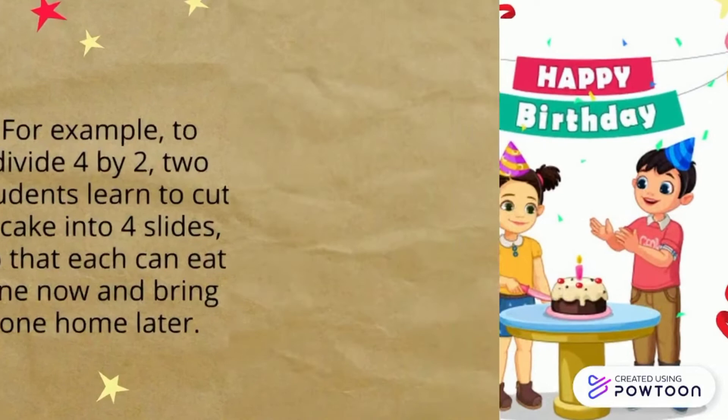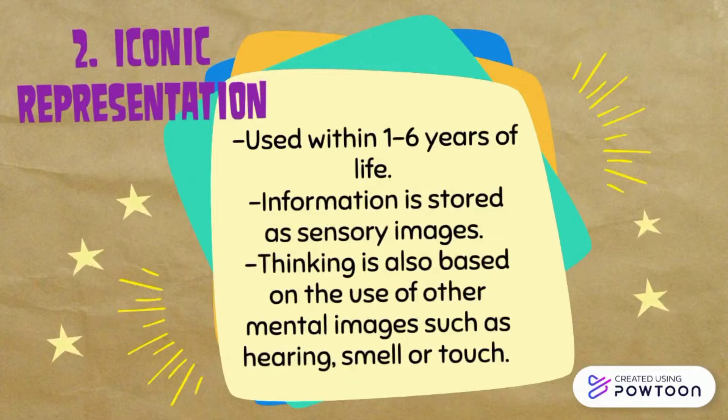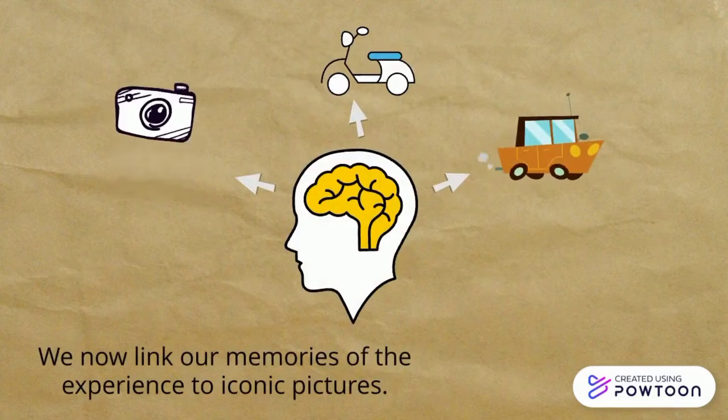Step two is iconic representation. This mode is used within one to six years of life. Information is stored as sensory images. Thinking is also based on the use of other mental images such as hearing, smell, or touch. We now link our memories of the experience to iconic pictures. For example, students are asked to draw a cake that was cut into four pieces.